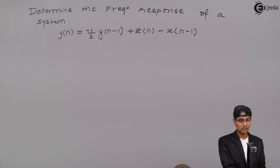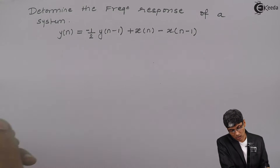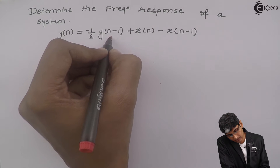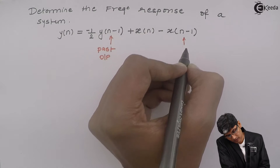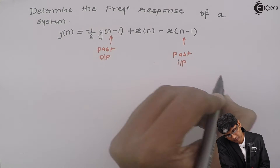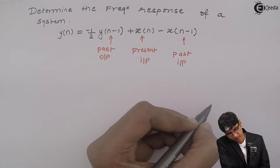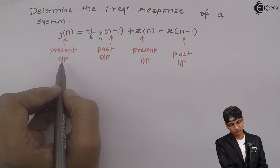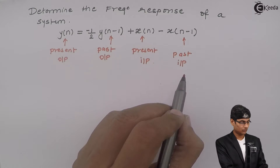The given problem is y(n) equals minus 1/2 y(n-1) plus x(n) minus x(n-1). We can see this term is the past output, this is the past input, this is the present input, and this is the present output. So the present output depends on past outputs and present and past inputs.